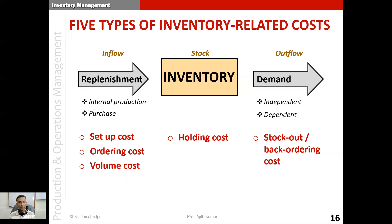The third cost type is called volume cost. Volume cost is the cost incurred when you buy in small volumes — equivalently, the discounts forgone when you don't buy in large quantities. When you buy larger quantities, suppliers give discounts and you save money. Volume cost is the money not saved by ordering in smaller volumes.